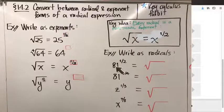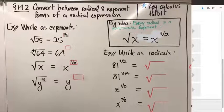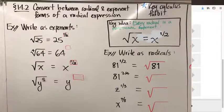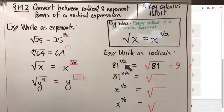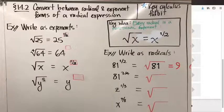That also equips us to do the problem on the right. If I give you 81 to the 1-half power, what is that equal to? According to our rule, 81 to the 1-half power is the same thing as the square root of 81, and the square root of 81 is 9. That's the other great thing about this property — it tells us how to raise numbers to fractional powers. I can't multiply 81 by itself 1-half time, but I can convert it to its radical version: the square root of 81, which equals 9 because 9 squared equals 81.